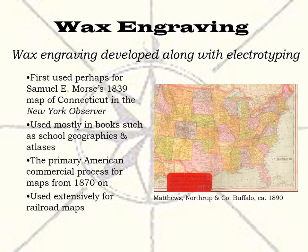Wax engraving was developed in 1839 along with electrotyping. The first use of it was perhaps Samuel E. Morse for his 1839 map of Connecticut in the New York Observer, and he later used the process for his Serigraphic Atlas of 1842. Initially wax engraving was used mostly for books such as atlases and school geographies. From the 1870s on, it became the primary American commercial map process, used by most American commercial map makers such as the Chicago firms of Rand McNally, George F. Cram, C.S. Hammond, and the Buffalo, New York firms of Jewett and Chandler and Matthews Northrup and Company. It was particularly extensively used for railroad maps. In Europe, wax engraving was used for illustrations, but not so much for maps.